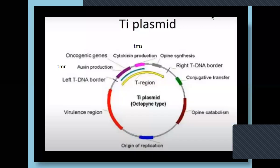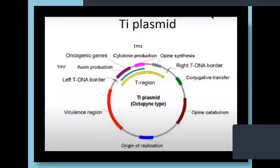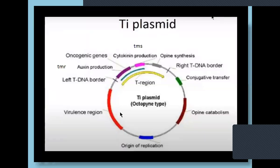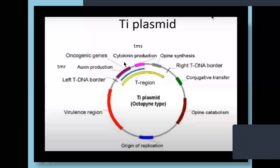The Vir region cuts open the T-DNA from the Ti plasmid, and once they cut the T-DNA, that will be integrated into the plant host genome — within the nucleus, wherever the genome will be, they go and integrate. We are exploiting this microbial activity for transgenic plants to obtain hybrid plants. The virulence region is responsible for transferring the T-DNA from the bacterial territory to the plant territory — from prokaryote to eukaryote.